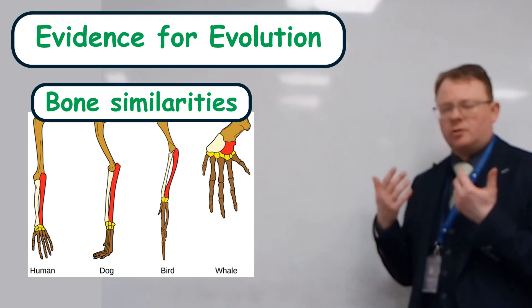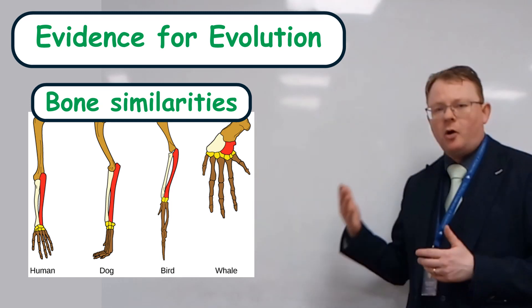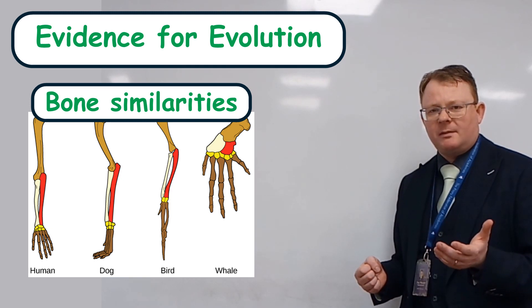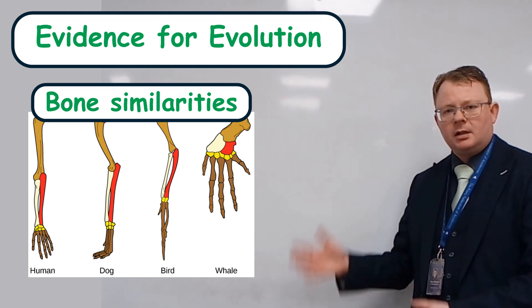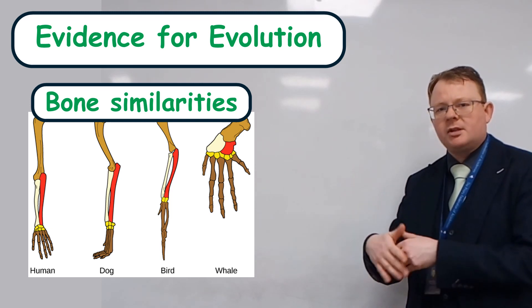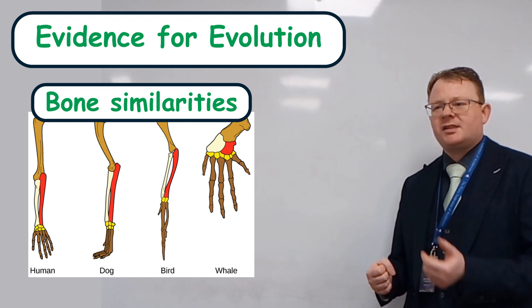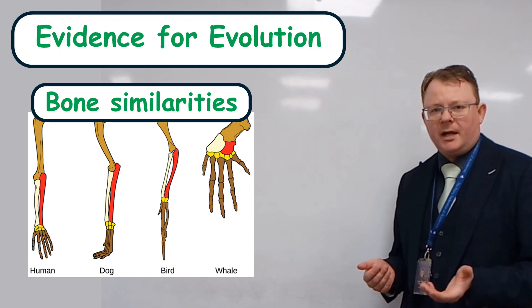You can go and look at structural features. So our bone structure, or bone structures of all mammals, are very similar. So for instance, if you go and look at the hands, whales have very similar hand bones to us. We have very similar hand bones to great apes, etc.